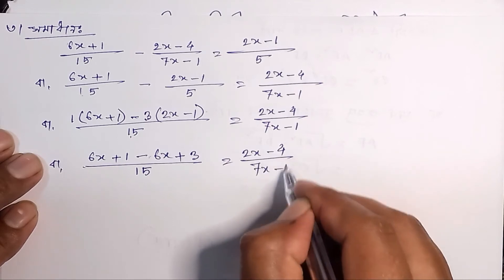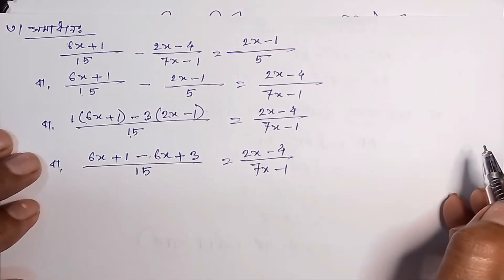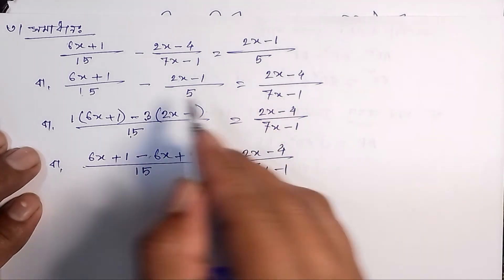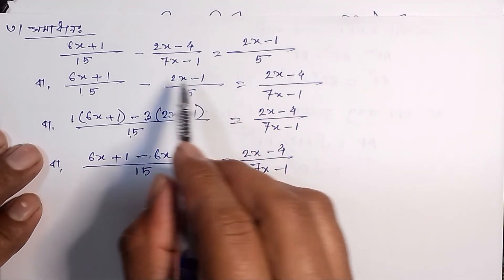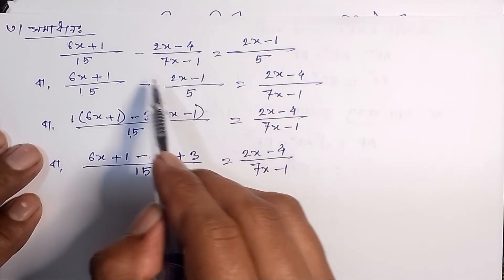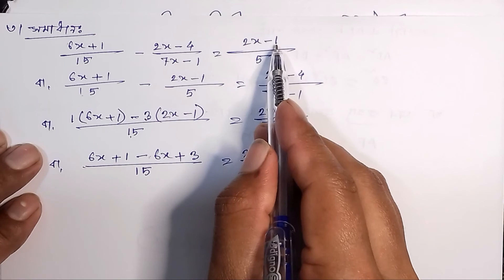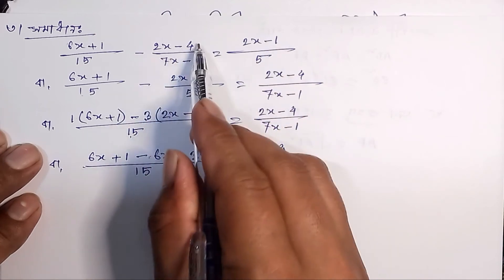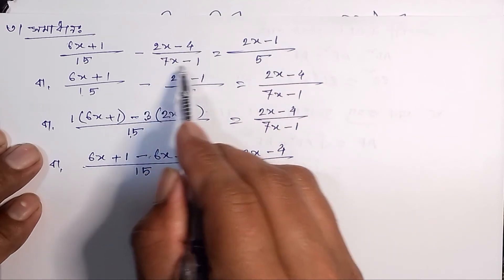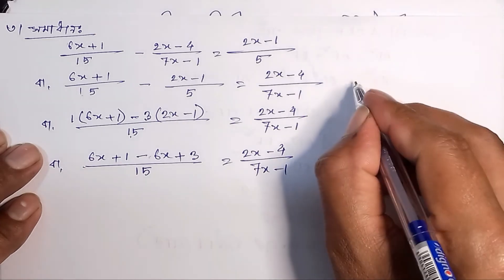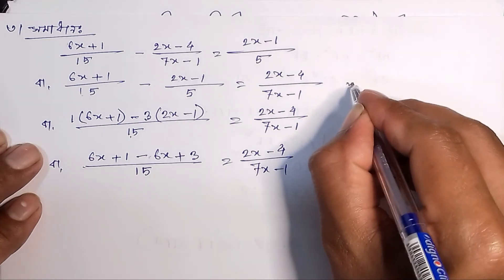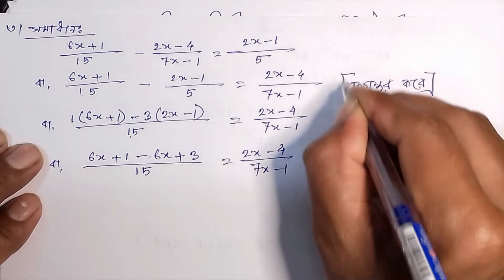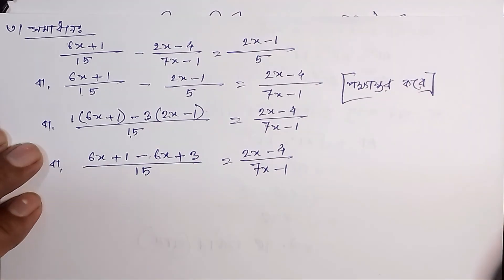We write the line above. We have (2x-1)/5 on one side and (2x-4)/(7x-1) on the other side. We write the line and proceed with cross multiplication.